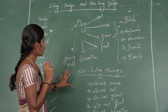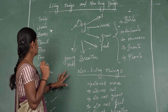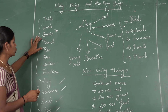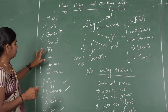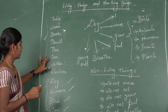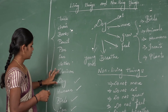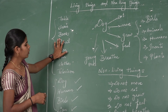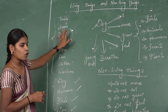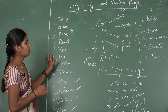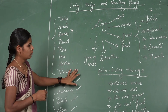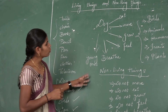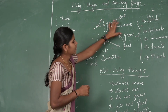Remaining things are non-living things - like table, chair, books, pencil, pen, fan, cloth, furniture, vehicles. All those things are called non-living things.